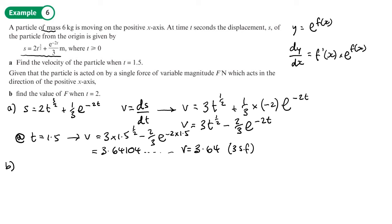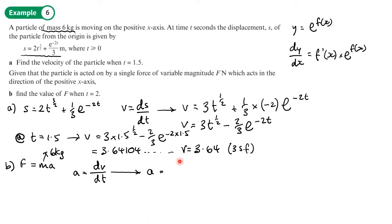Part b: the particle is acted on by a single force of variable magnitude F acting in the direction of the positive x-axis. Find the value of F when t = 2. This is an F = ma question — force equals mass times acceleration. We have mass = 6 kg, so we need the acceleration, which we get by differentiating the velocity.